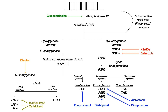Epoprostanol inhibits PGI2, carboprost inhibits PGF2, dinoprostone inhibits PGE2, and alprostadil inhibits PGE1. You'll notice that in all of these medication names you see PROST — P-R-O-S-T. So if you have to guess what these things inhibit, it's either going to be a prostaglandin or a prostacyclin because they all have PROST in the name.